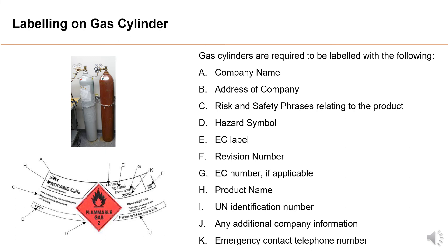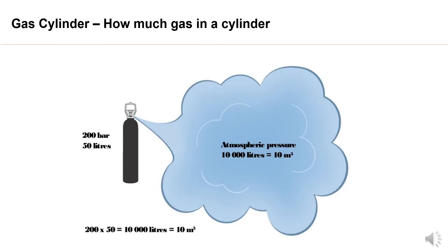How Much Gas is Inside the Cylinder? The amount of gas inside the cylinder can be calculated by the formula PV = NRT. For example, if the pressure of the gas cylinder is 200 bar and the volume is 50 liters, then the amount of gas inside the cylinder is equal to 200 multiplied by 50, which equals 10,000 liters, or 10 meter cube.